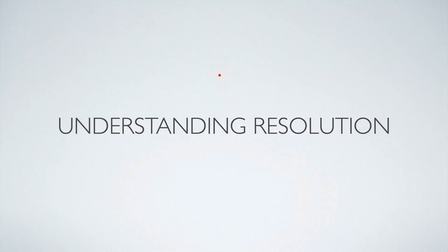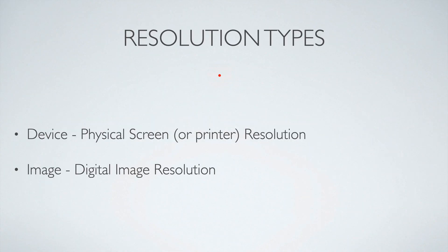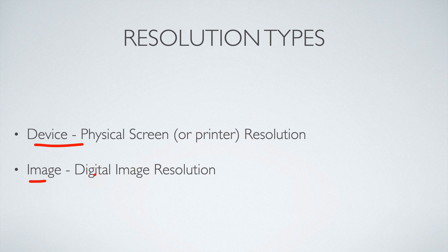Let's take a look at the basics of resolution. I've broken resolution down into two main categories: device resolution, meaning the actual physical screen you're looking at — whether that be a printer, a laptop, or a phone — and digital image resolution, meaning a digital image like a JPEG. Let's look at the device or physical resolution jargon and terms first.